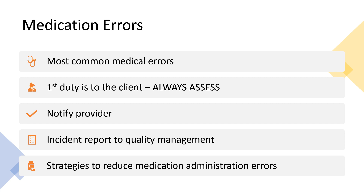There are various strategies for reducing medication errors. First, the nurse should always use two types of identifiers to identify the client — name, date of birth, social security number, or medical record number. Another strategy is to use appropriate administration techniques for the prescribed medications. The nurse must calculate the dose of medication correctly and double-check any complicated calculations, high-risk medications, IV medications, or pediatric doses.